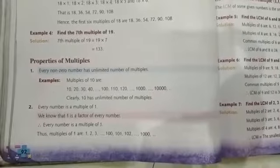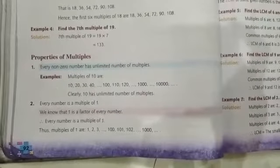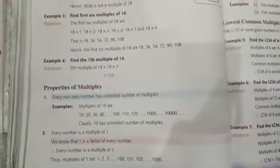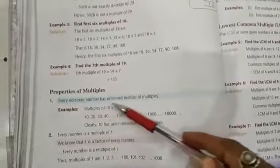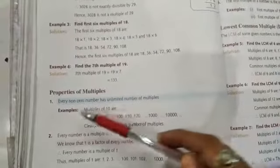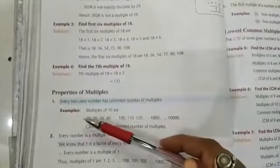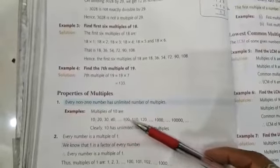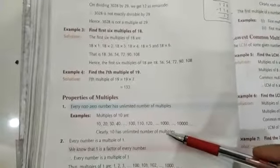Students, firstly I would like to explain you properties of multiples. So multiples have 6 properties. This first property is every non-zero number has unlimited number of multiples. For example, multiples of 10 are 10, 20, 30, 40, 100, 1000, 10,000 and so on. Clearly 10 has unlimited number of multiples.